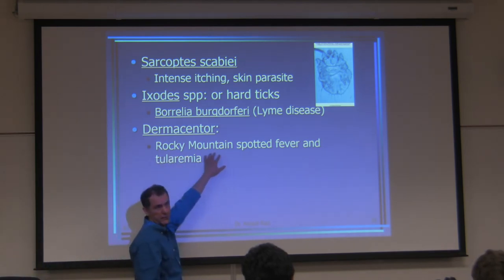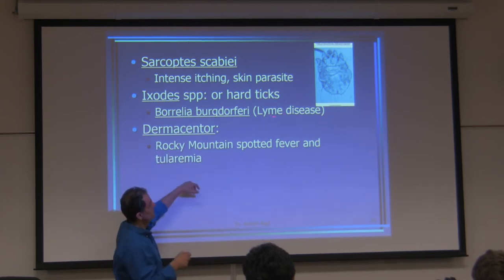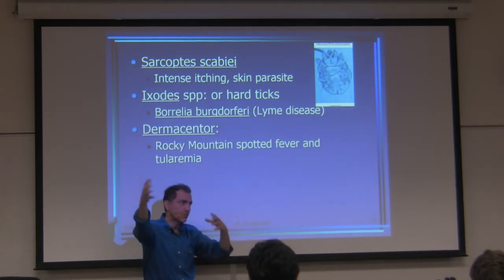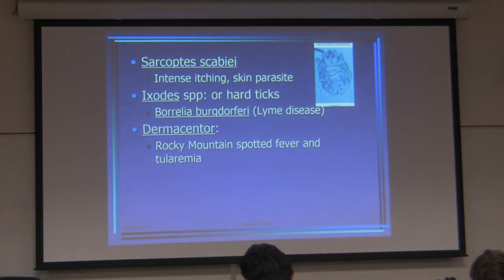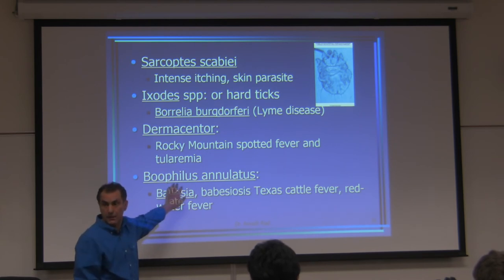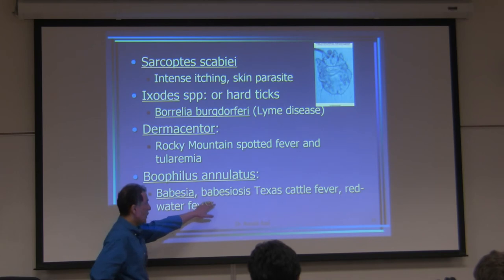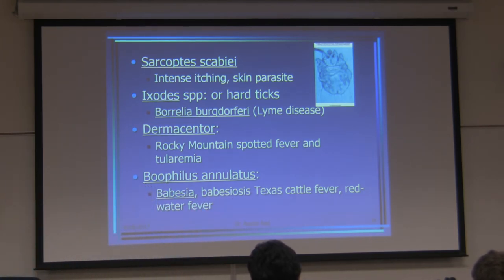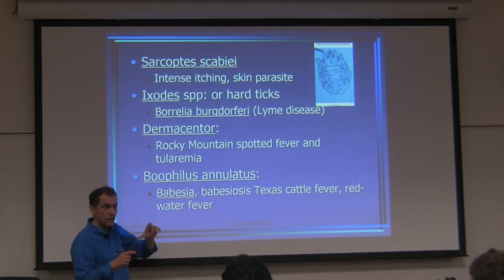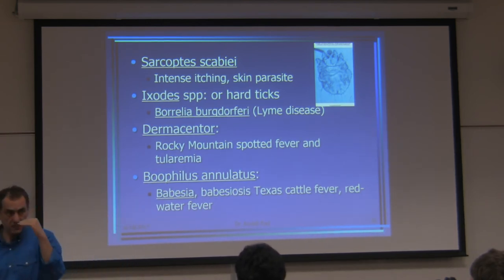Rocky Mountain spotted fever was first discovered in the Rocky Mountains. Babesia — transmitted by Ixodes — causes Babesiosis, which we call Redwater fever in cattle. Humans can get it too, but it's a different species of Babesia. Babesia in humans is similar to malaria. Remember that many doctors have misdiagnosed Babesia as malaria, because under the microscope they look similar — but a trained eye can tell the difference.